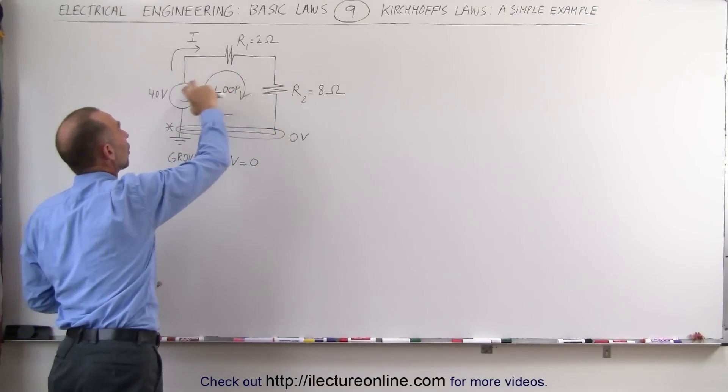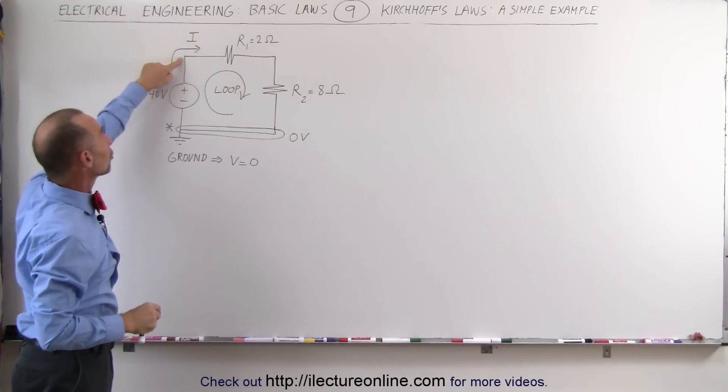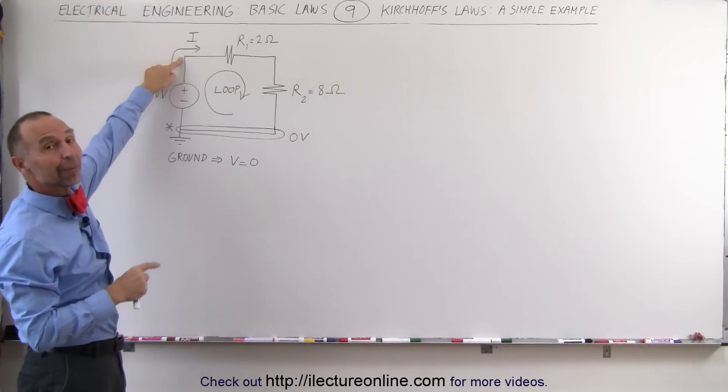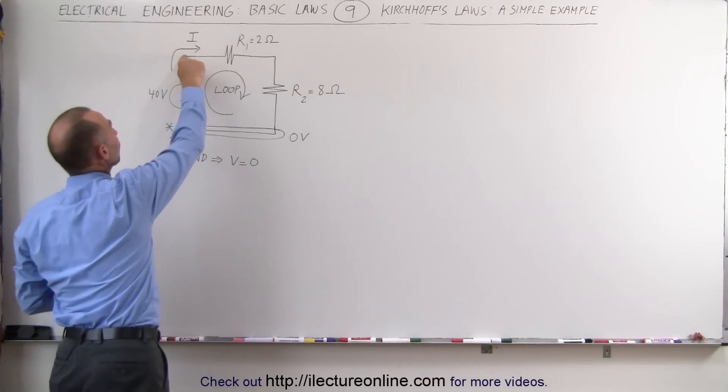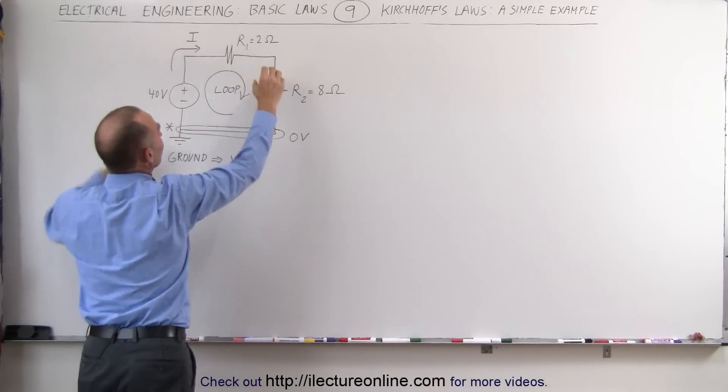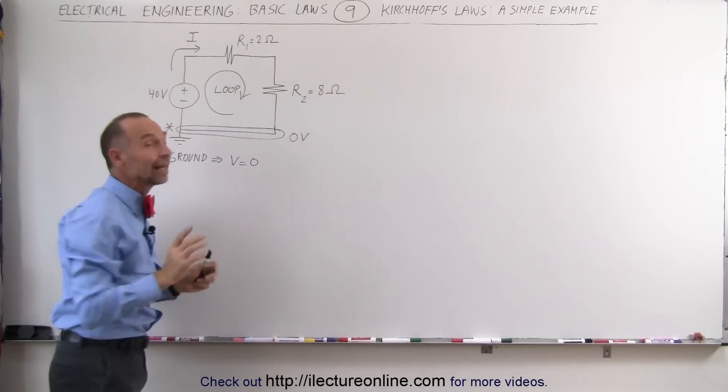All the components are connected in series, meaning any two components only share a single node between them that is not shared by any other branch or any other component. Here this is shared by these two components, this is shared by these two components, and this node is shared by these two components and not by any others.